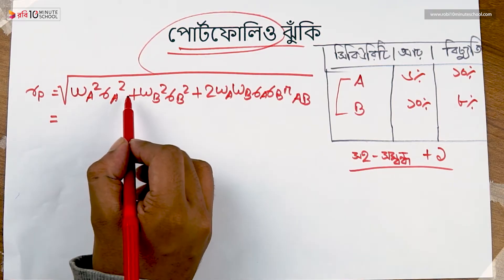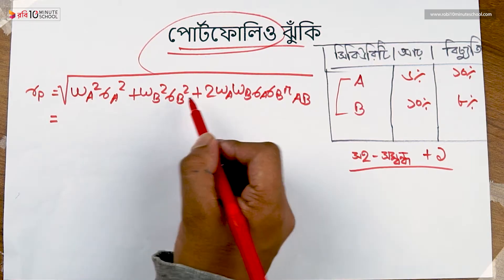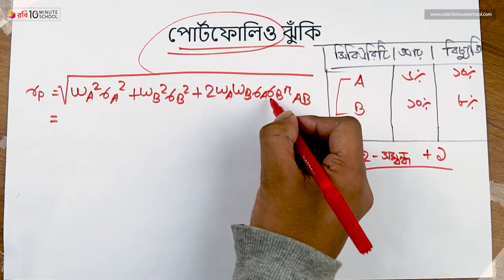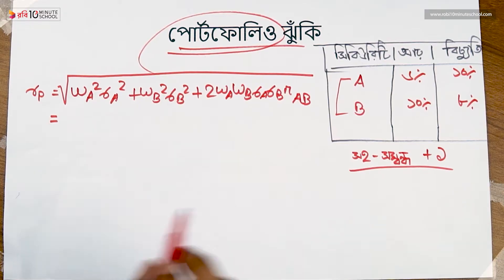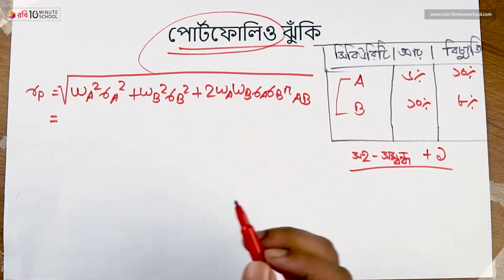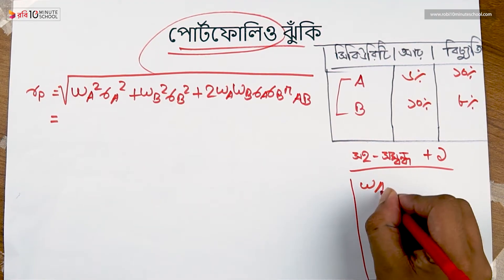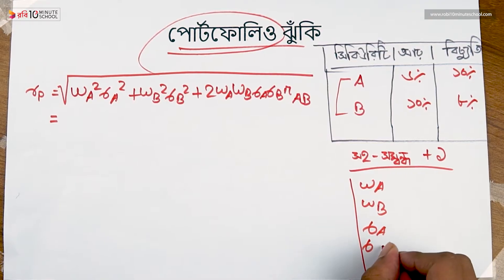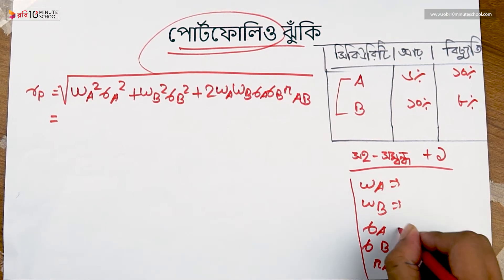The portfolio variance formula involves sigma squared, plus two times w_a times w_b times sigma_a times sigma_b — covering the key components and weights of the two-security portfolio.